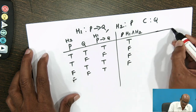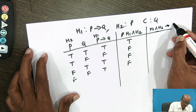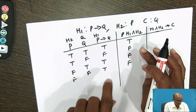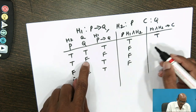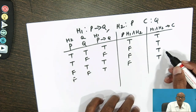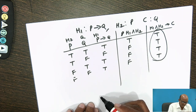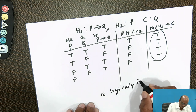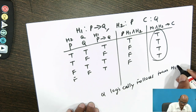The last column is (H1 ∧ H2) → C, where C is Q. So we evaluate (H1 ∧ H2) → Q: T → T is T, F → F is T, F → T is T, and F → F is T. All rows give true, so Q logically follows from H1 and H2.